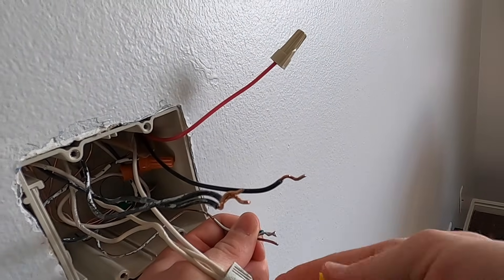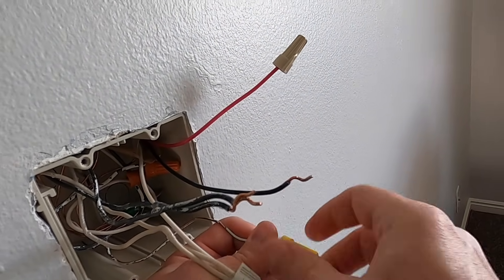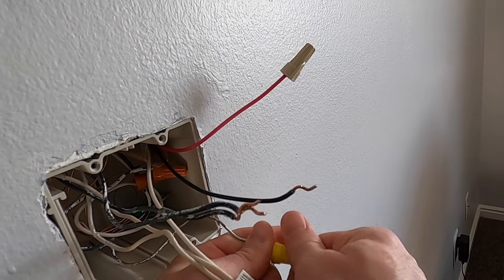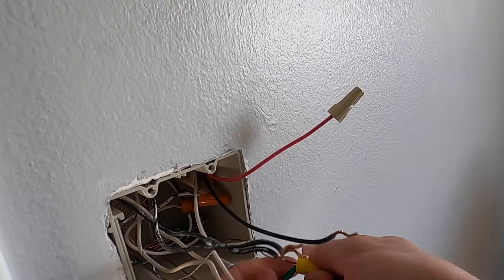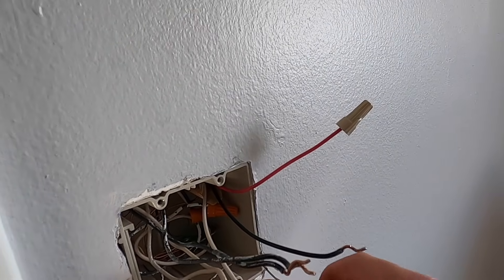And now to the wall box. This is the scenario where the power coming from the circuit breaker comes to my wall switch first. And I'm going to wire two separate switches in here. One for the light control, the other for the fan control.